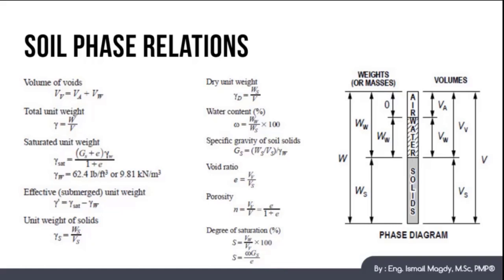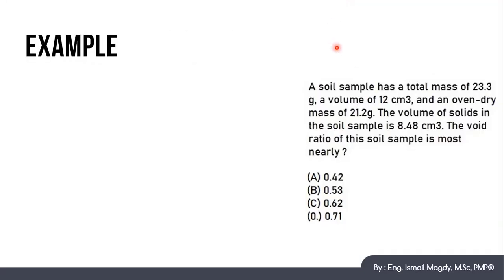So now let's have a couple of examples. We have a soil sample with total mass of 23.3 gram, volume of 12 cm cube, and the oven dry mass of 21.2 gram. The volume of solids is 8.48 cm cube. And we want to calculate the void ratio of the soil sample.